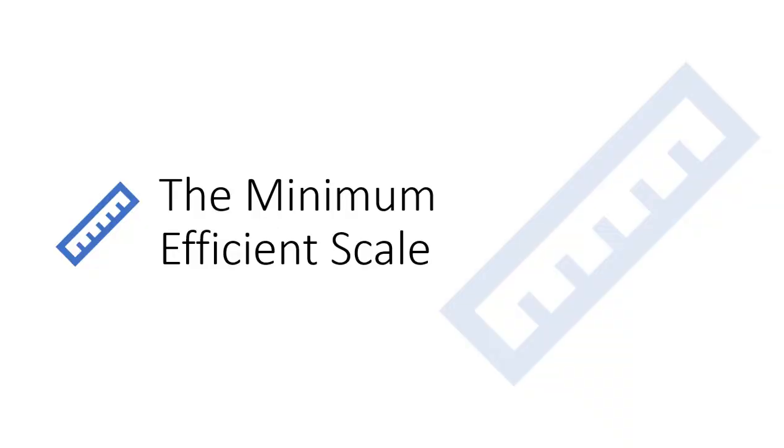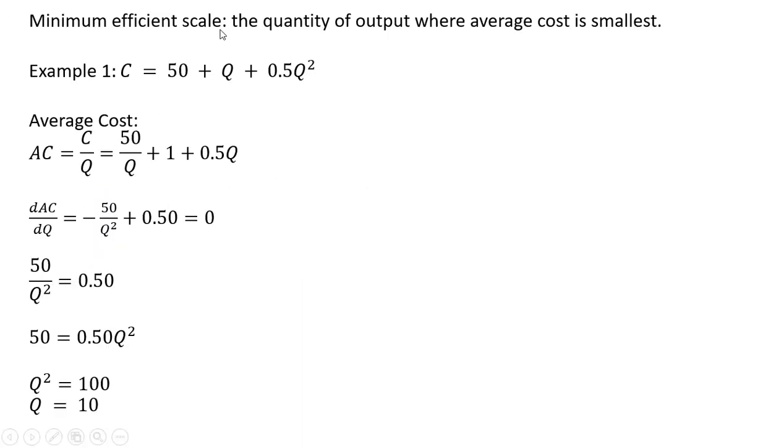Hello. In this video, we're going to look at finding the firm's minimum efficient scale. The minimum efficient scale is the quantity of output where average cost is smallest.